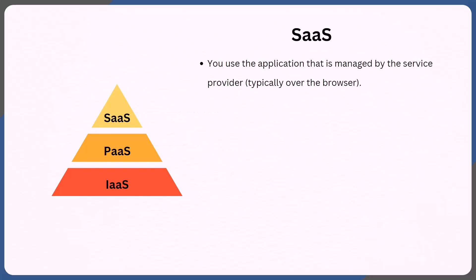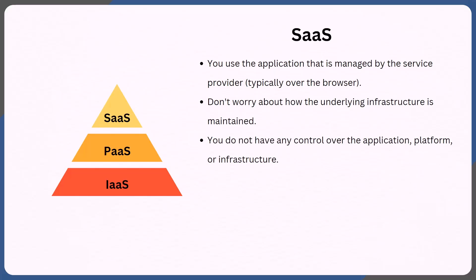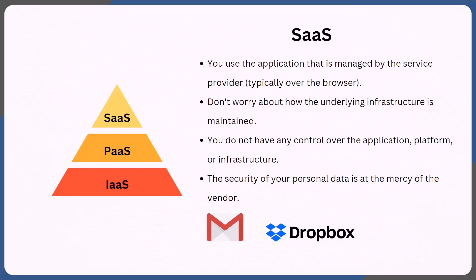In SaaS, the end user would just use the application that is managed by the service provider, typically interacting with it over the browser. The end user doesn't have to worry about the underlying infrastructure and how it is managed or maintained. You do not have any kind of control over the application, platform, or the infrastructure — it is all managed by the service provider. The security of your personal data is at the mercy of the vendor. Gmail and Dropbox are a couple of examples of SaaS.